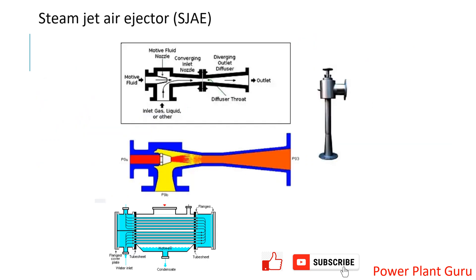Now coming to the ejector. The condenser sits at a lower level — say ground floor or zero meters — and the ejector is connected through a pipe and mounted at a higher elevation, such as seven meters or the first floor. The ejector uses a medium-pressure motive steam, typically around 18 to 19 kg/cm², which enters through a nozzle.